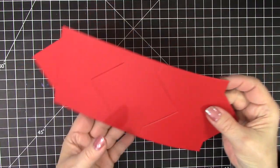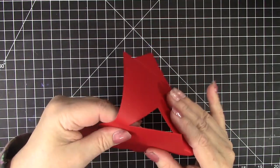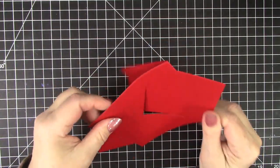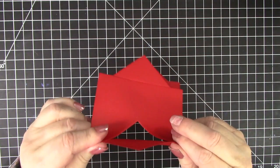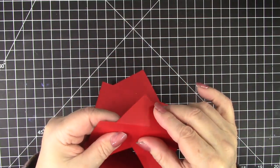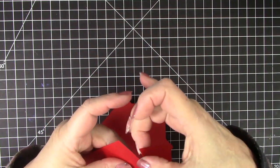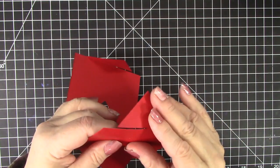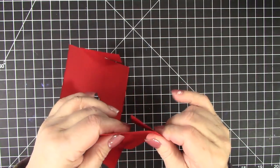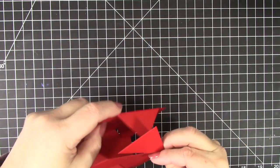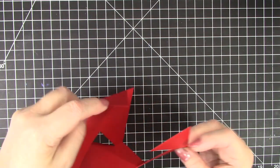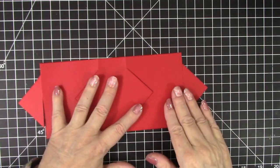So all you do is there are scored lines. So you just fold on the scored lines. And then there's a scored line here with the slot. And if you were putting this together right away, you would just slide those slots together. But we're going to decorate it first.